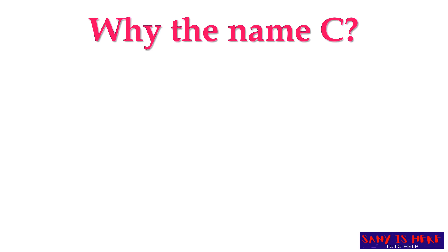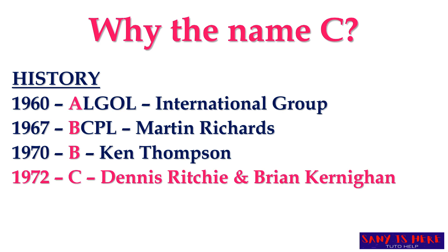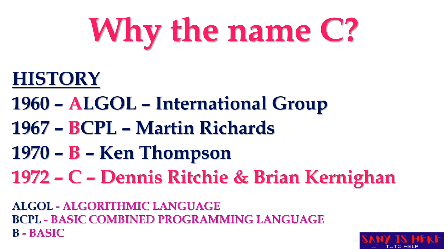Let us see why the name is C — why they have given it the name C. To know about this we need to know the history of C. In the 1960s there was a programming language called ALGOL — Algorithmic Language — which was developed by an international group. Then in 1967 there was a better language called BCPL, which means Basic Combined Programming Language, developed by Martin Richards.